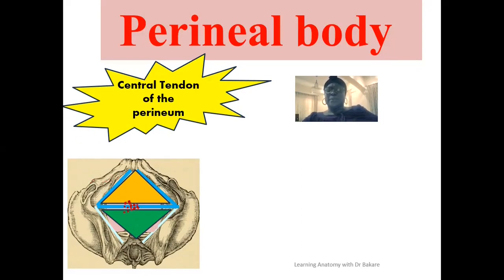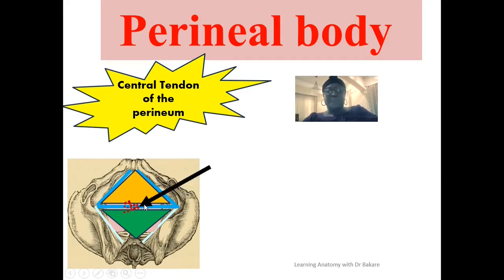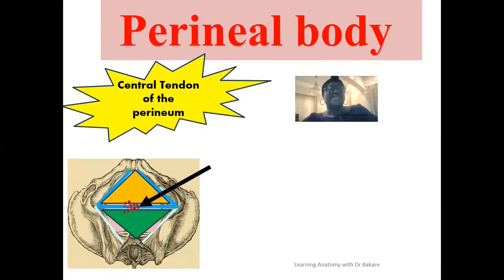In between the urogenital triangle, highlighted in yellow at the front, and the anal triangle, highlighted in green at the back, is where we have the perineal body, highlighted in dotted red. This perineal body is a collection point of different muscles located around the perineum. In this lecture, we'll look at its structural configuration and the functions it exhibits.